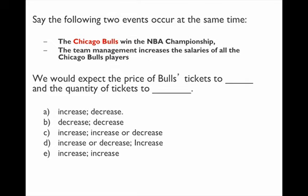Let's analyze the two things that happened. The first thing is the Chicago Bulls win the NBA championship — this is a hypothetical situation, but maybe we get lucky and it becomes a reality this year. And at the same time, the team management increases the salaries of all the Chicago players. So after these two things happen, what's going to be the effect on price and quantity?